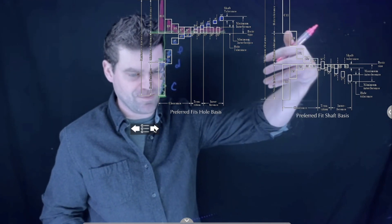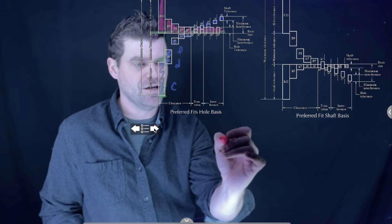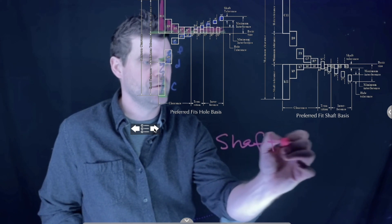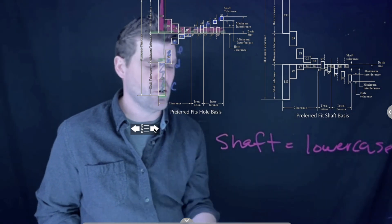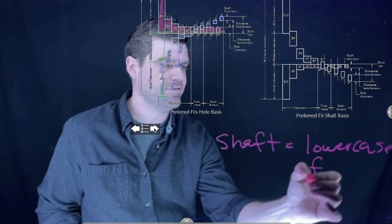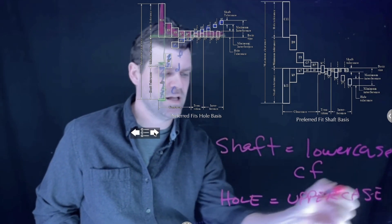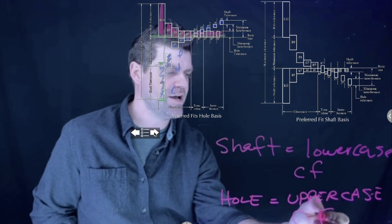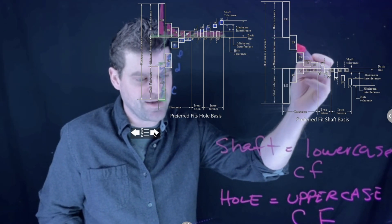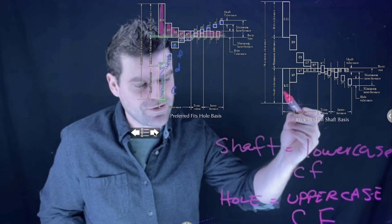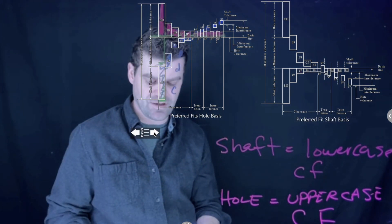The shaft basis system chart is basically the same thing flipped upside down. One key distinction: shaft designations use lowercase letters — lowercase c, f, etc. — while hole designations use uppercase letters — capital C, capital F. So in the hole basis chart you'll see uppercase C, D, F for the hole and lowercase letters for the shaft. These distinctions are likely to appear as exam questions.